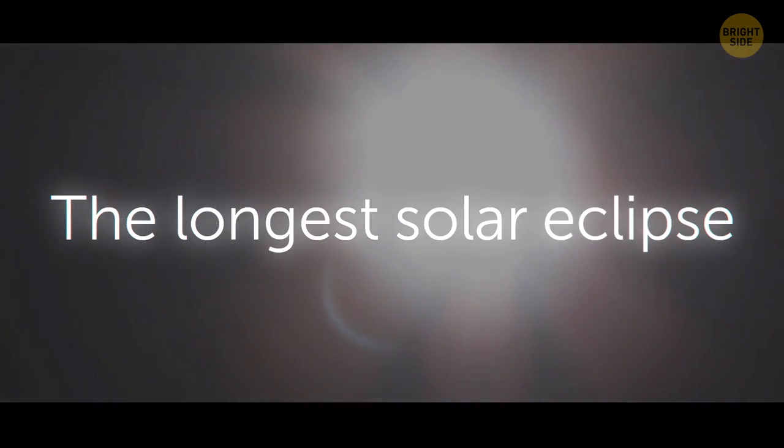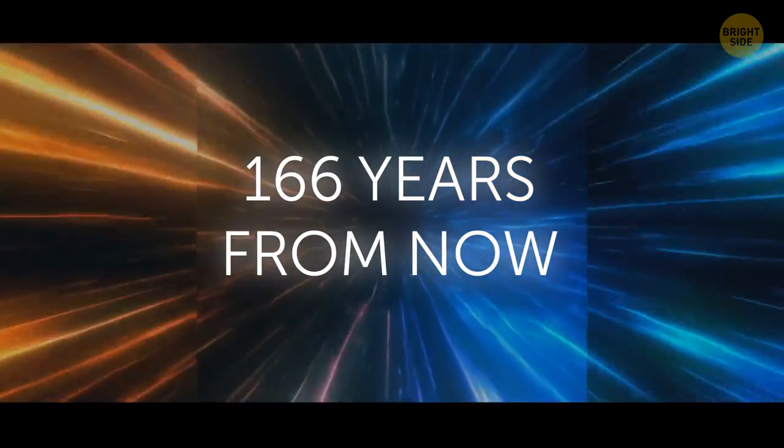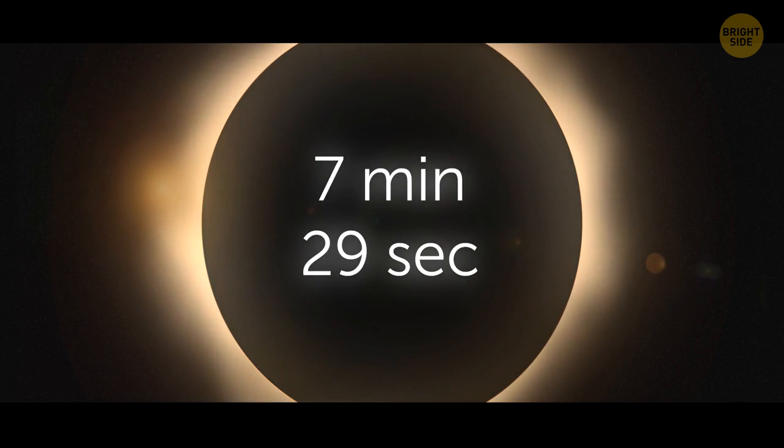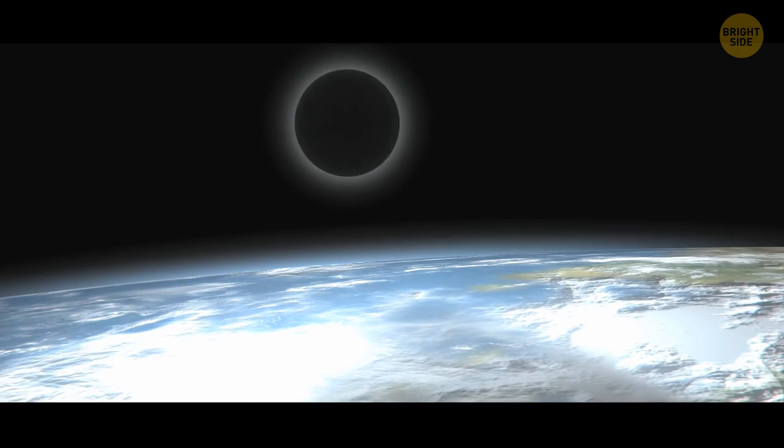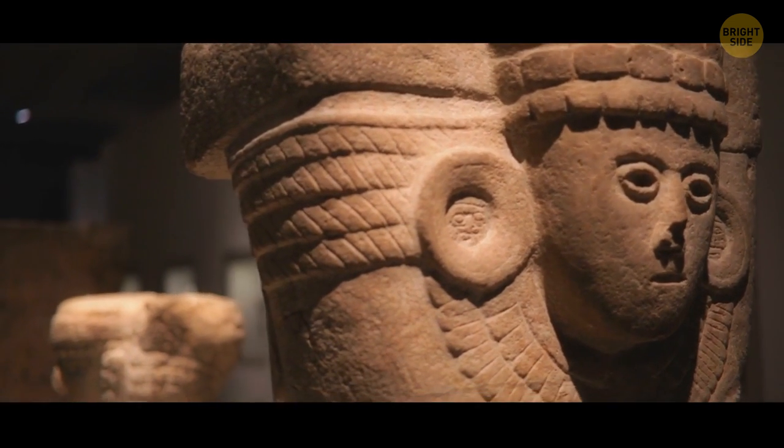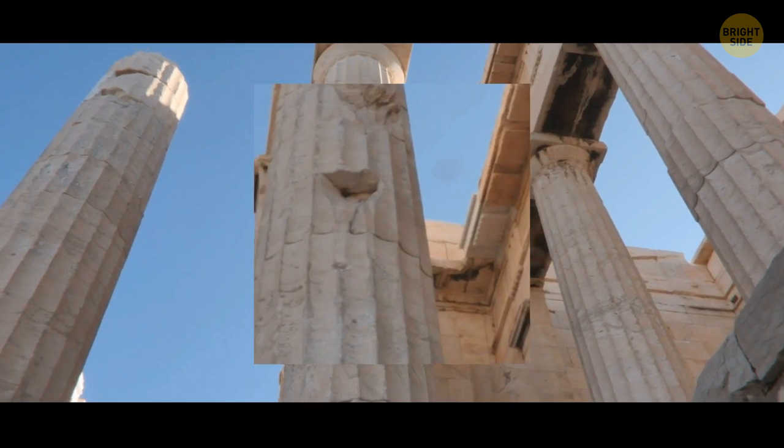The longest solar eclipse. 166 years from now, the Sun will go dark for 7 minutes and 29 seconds. This is pretty close to the predicted maximum. It'll also be the longest eclipse human civilization has ever witnessed in its 10,000 years.